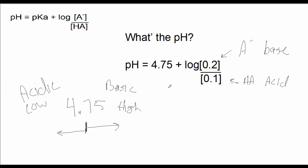So look at what we have here. A little more base than acid. There's the pH if we had equal amounts of acid and base. So now the question is, is the pH going to be greater than 4.75 or less than 4.75?